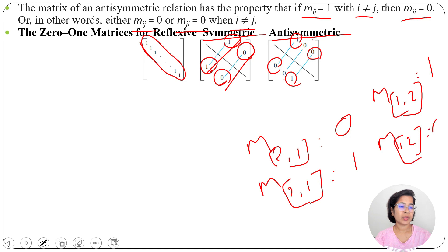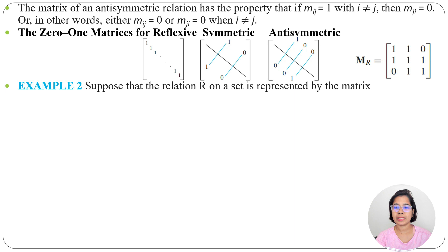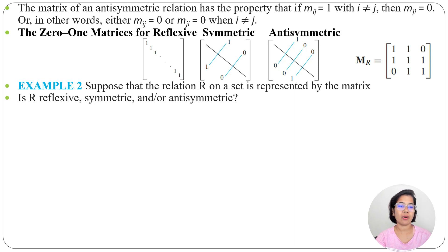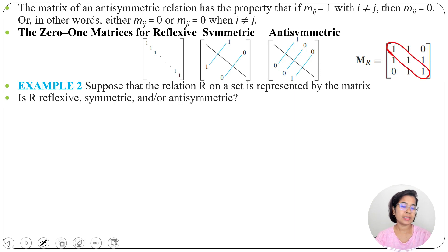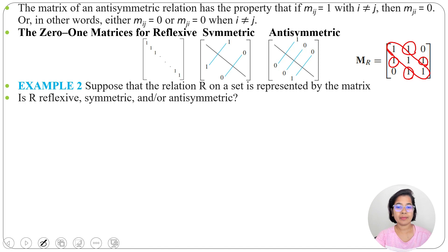Now, given an example matrix, we need to check whether it is reflexive, symmetric, or anti-symmetric. All diagonal elements are 1, so it is reflexive. The off-diagonal symmetric pairs are the same — (1,1) and (1,1) — so it is symmetric. But it is not anti-symmetric. So the matrix is reflexive and symmetric, but not anti-symmetric.